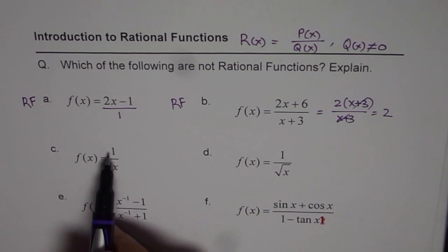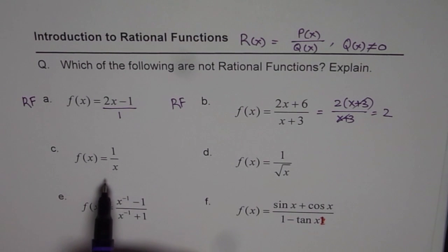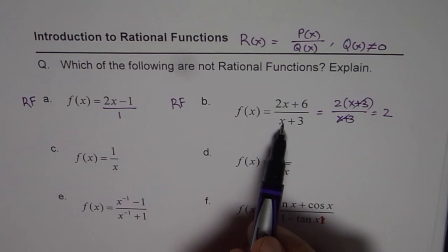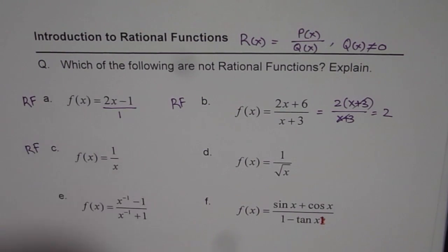Now we have 1 over x. Now 1, as I said, is a constant, will be considered to be a polynomial divided by another polynomial. It has a restriction. x cannot be equal to 0. This has a restriction. x cannot be minus 3. So this is also a rational function.